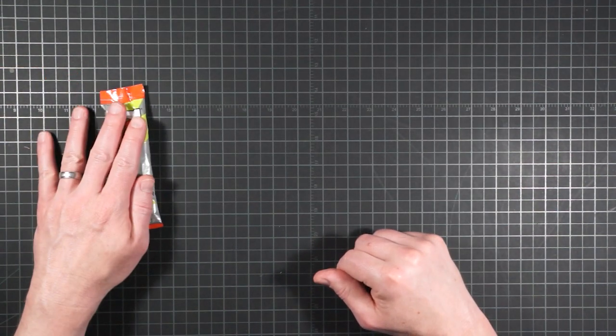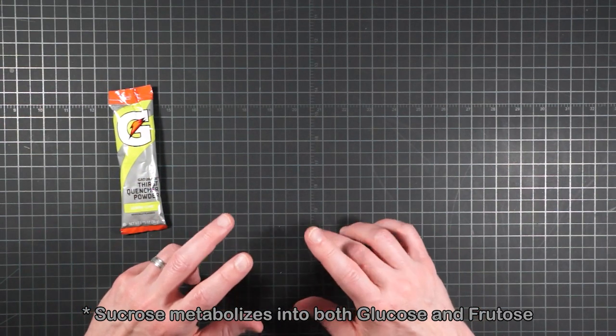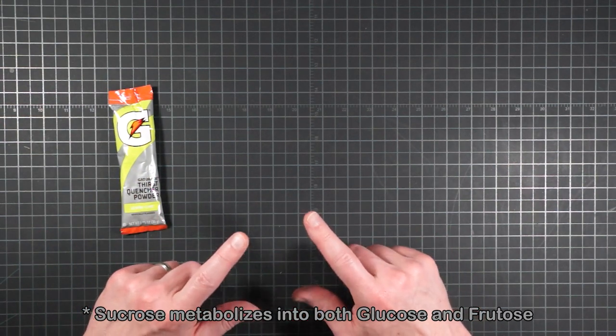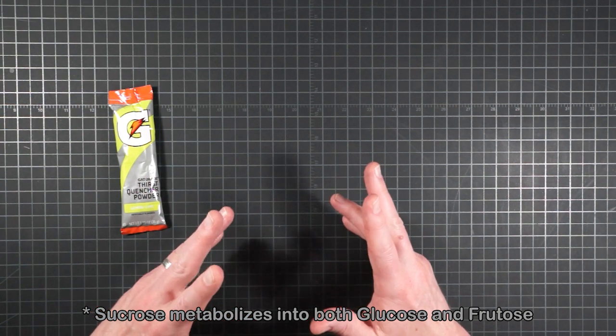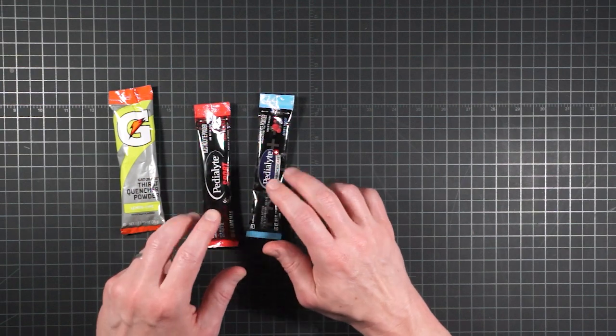Well, Gatorade's been doing this for many years with both sugar and dextrose in the ingredients. And where there is some sugar, most of the good ones seem to take advantage of multiple types. The Pedialytes have both dextrose, which is glucose, and fructose.